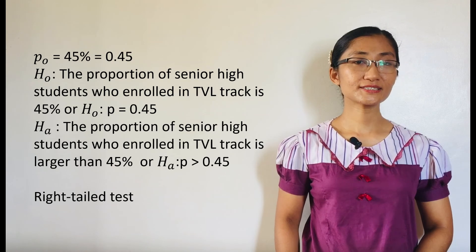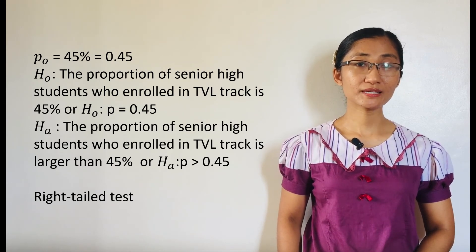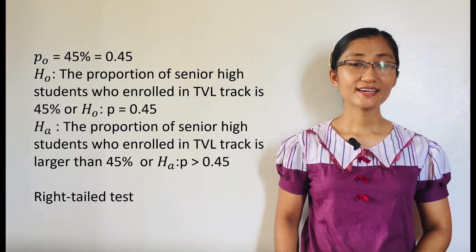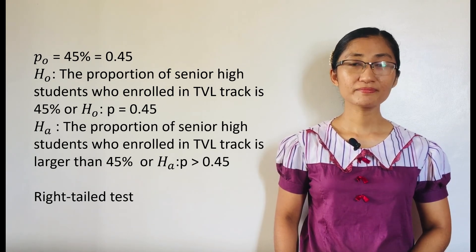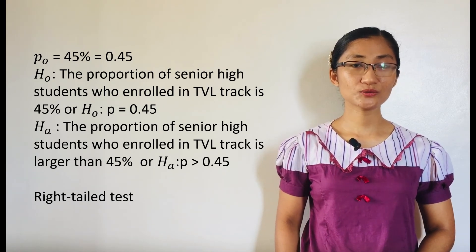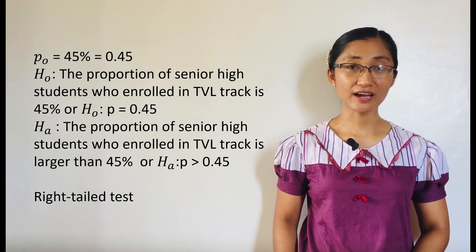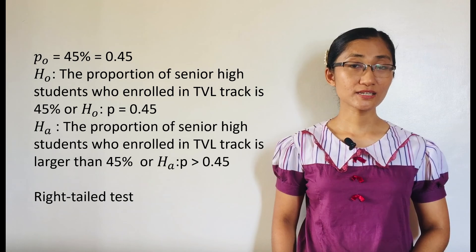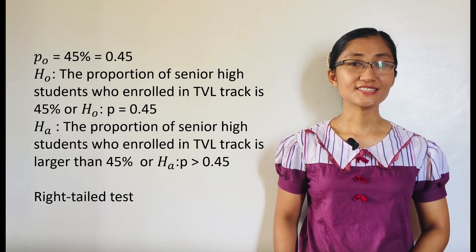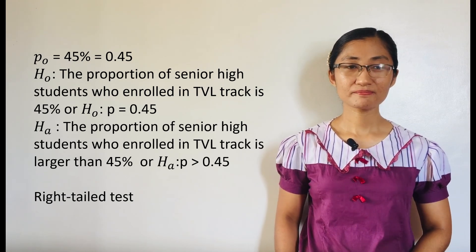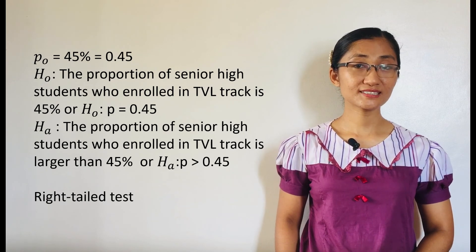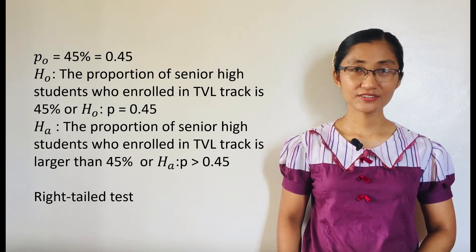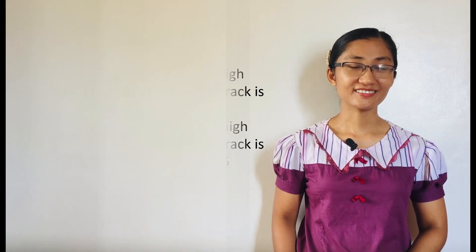Hence, the alternative hypothesis is H sub A: the proportion of senior high students who enrolled in TBL tract is larger than 45%, or H sub A: P greater than 0.45. We have to take note that this is a one-tailed test, or directional. Specifically, it is a right-tailed test.